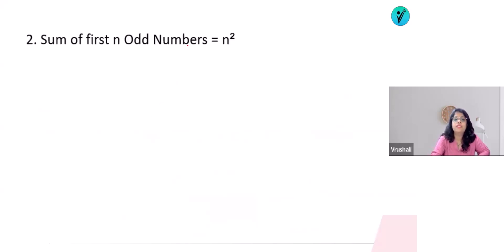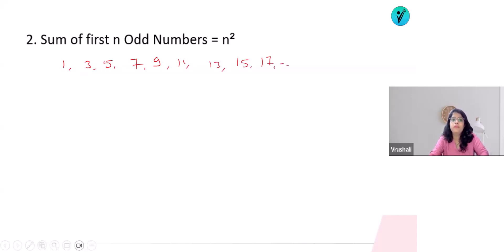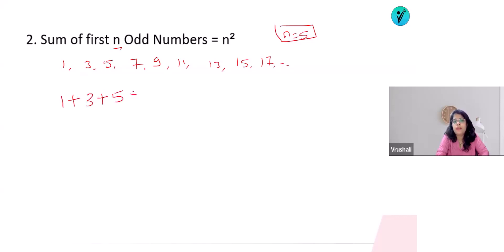Now the sum of first n odd natural numbers. The odd numbers are 1, 3, 5, 7, 9, 11, 13, 15, 17, and so on. Suppose I ask: what is the sum of the first 5 odd numbers? Those are 1 + 3 + 5 + 7 + 9.